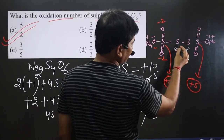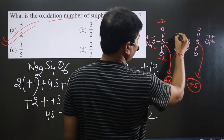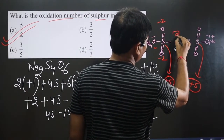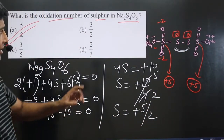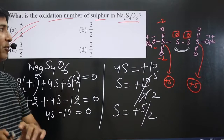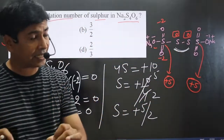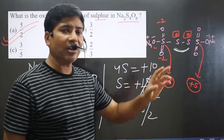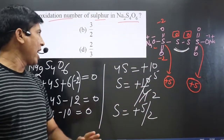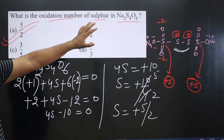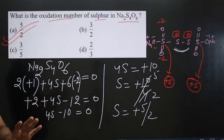The two central sulfur atoms are bonded directly to each other with no electronegativity difference between them, so they are each in a zero oxidation state. To summarize: when calculating the oxidation state of sulfur, you must check the environment from the structure. Two sulfur atoms out of four are in a zero oxidation state and two are in a +5 oxidation state. But when calculating the oxidation number, we get +5/2 — that is the correct answer.